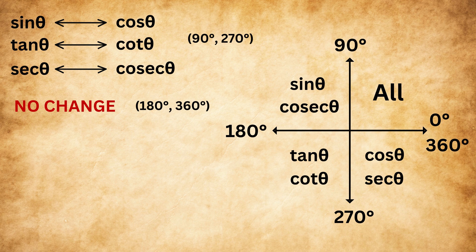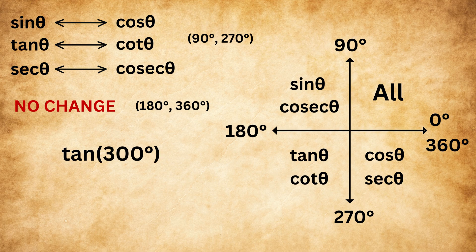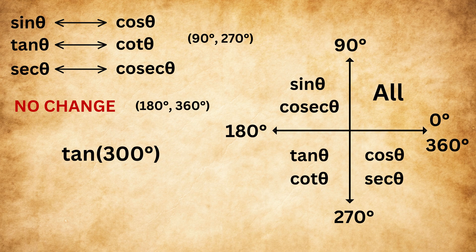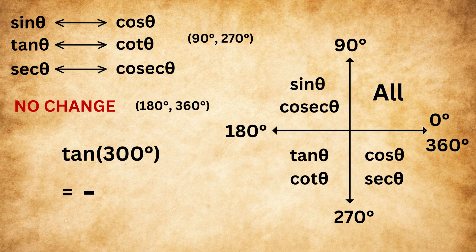Now, let's take another example. Find tangent of 300 degrees. First, check the quadrant. 300 lies between 270 and 360 degrees. That means it is in the fourth quadrant. In the fourth quadrant, only cosine and sec are positive, and the rest are negative. So tangent of 300 will be negative.